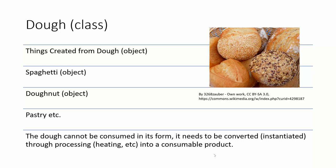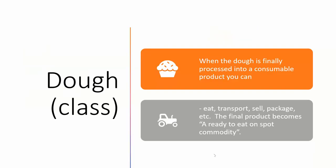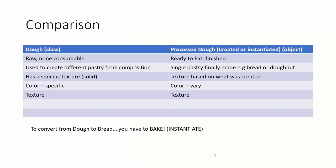Dough is a template, it's a class, and then your pastry objects are the actual real things you create from dough. That's a very basic layman definition of what objects and what classes are in programming. When dough is finally processed into a consumable product, that is when you can eat it, transport it, sell it, package it — and then the final product becomes a ready-to-eat commodity.